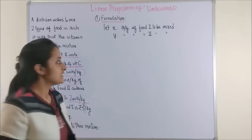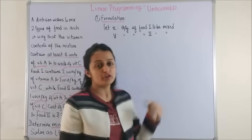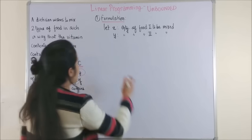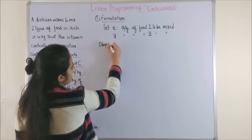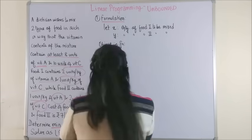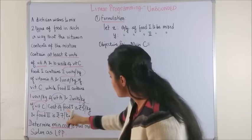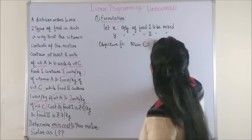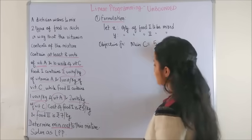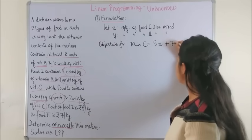So, we say let x be the quantity of food one to be mixed and y be the quantity of food two to be mixed. Next, the objective function: what is the aim in our question? We have to minimize the cost. So, the cost for food one is 5, so 5x, plus if the cost per kg for food two is 7 and we are using y units, so 7y.